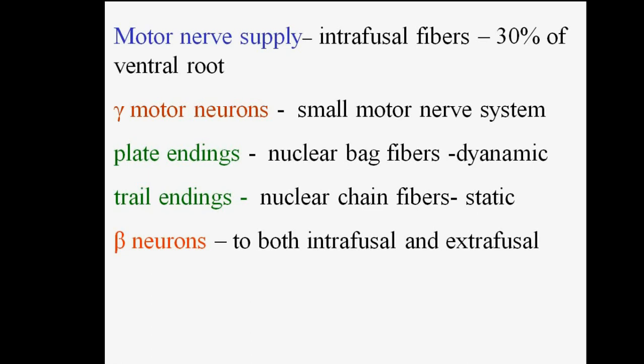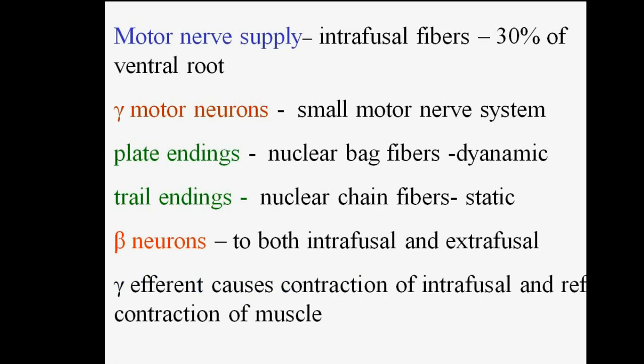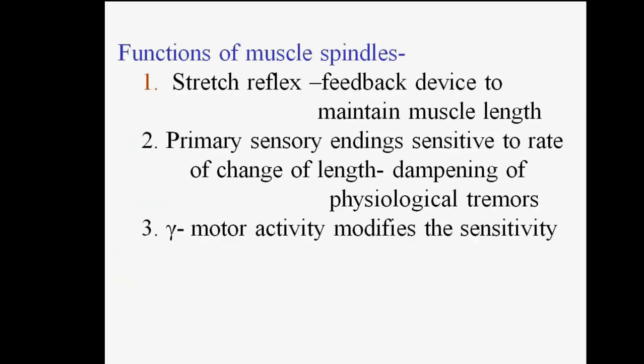Beta neurons are attached to both intrafusal and extrafusal fibers. Gamma efferents cause contraction of intrafusal fibers and reflexes of contraction of muscle.